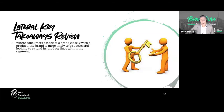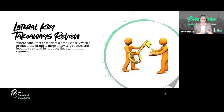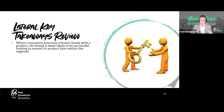Every brand needs an expansion point — a pivotal characteristic that gives a brand an emotional basis for growth. With Coca-Cola it's really around happiness and happy memories. Where consumers associate a brand closely with a product, the brand is more likely to succeed by extending product lines within that segment. M&M's is a great example — they started with chocolate candy-coated chocolate, then added peanuts, pretzels, almonds, and caramel, and they have permission to keep going because their brand is closely associated with that product.